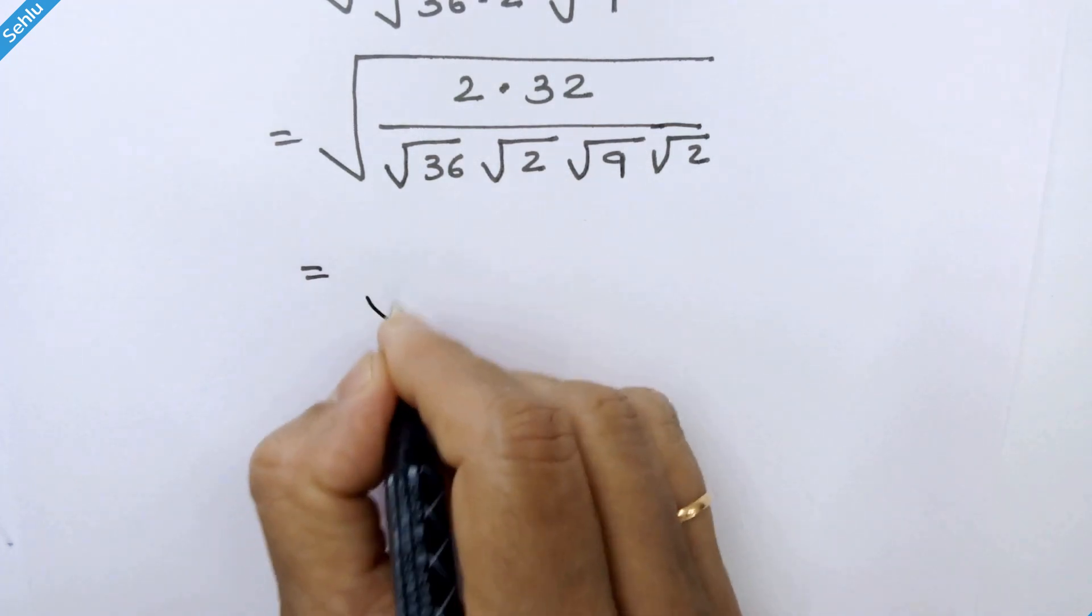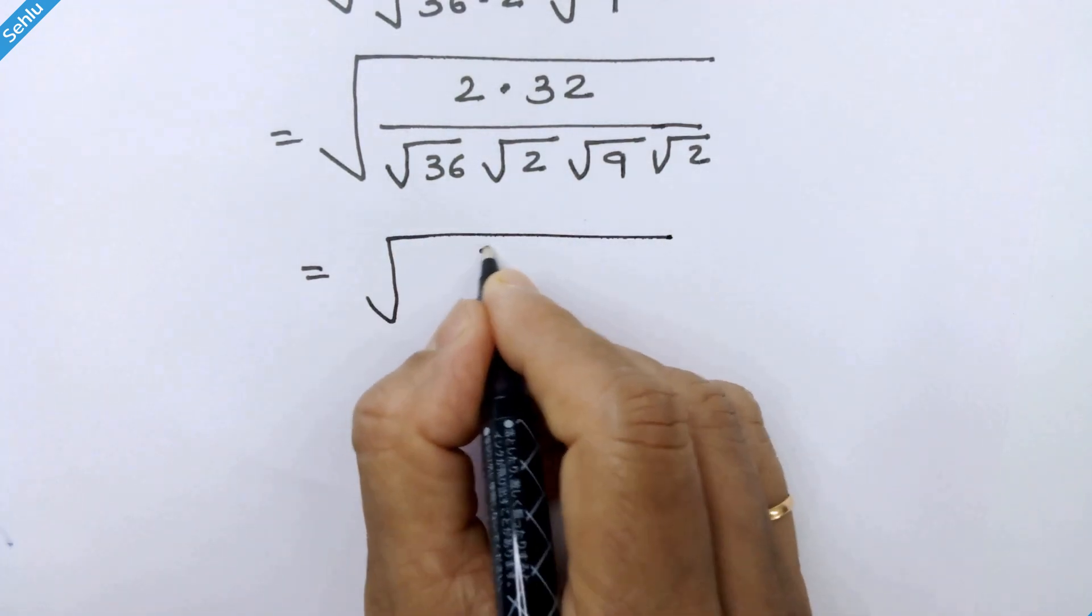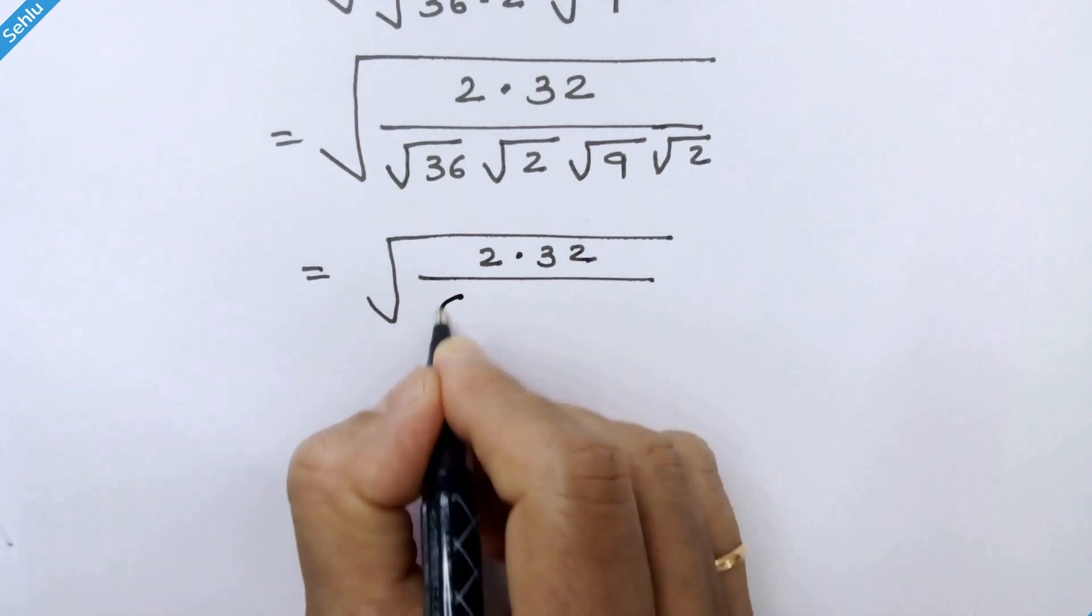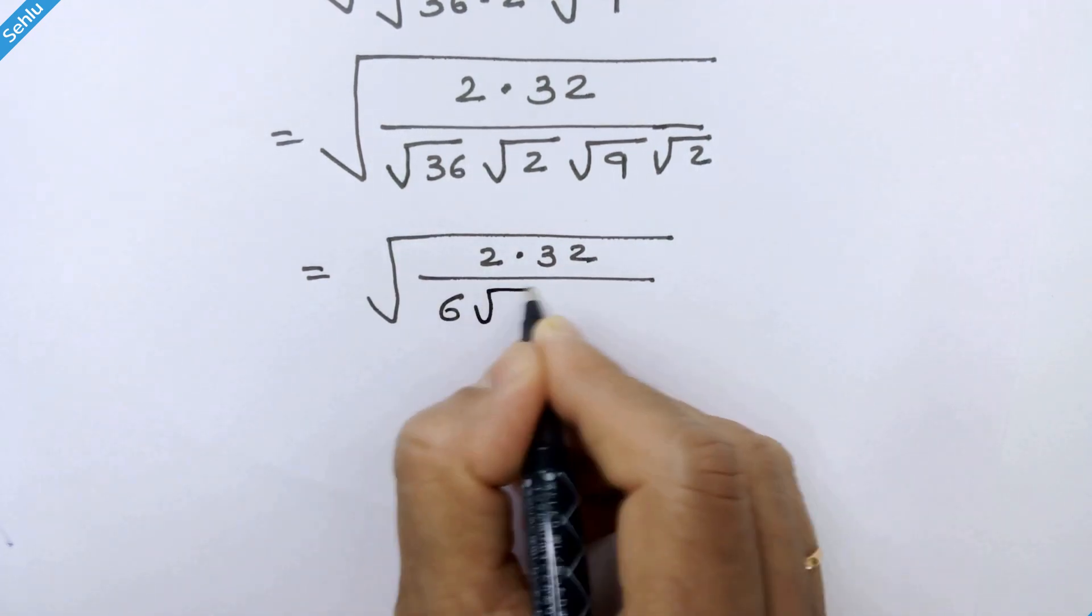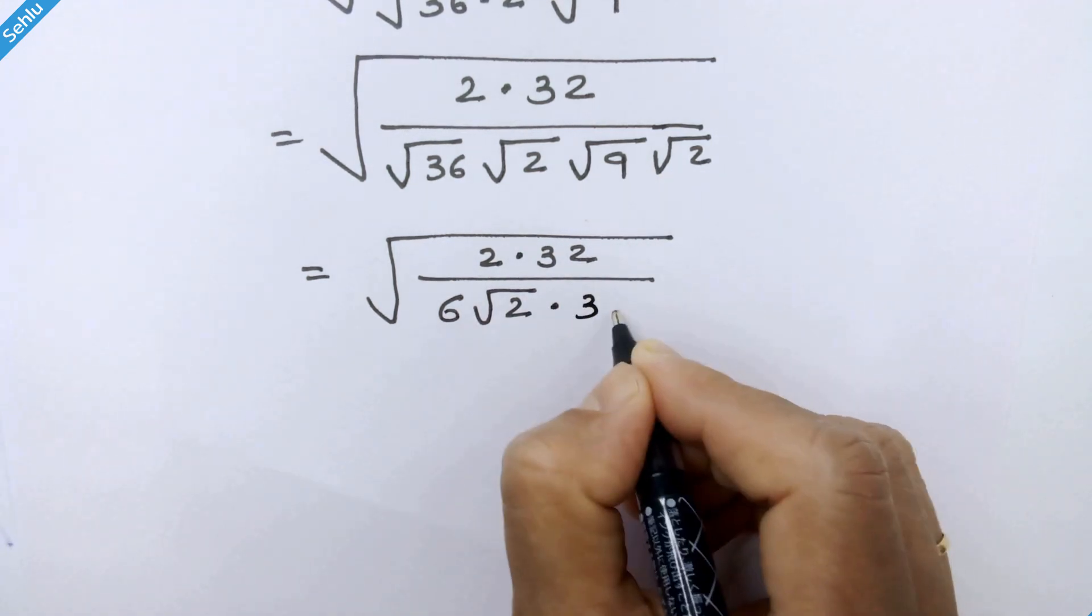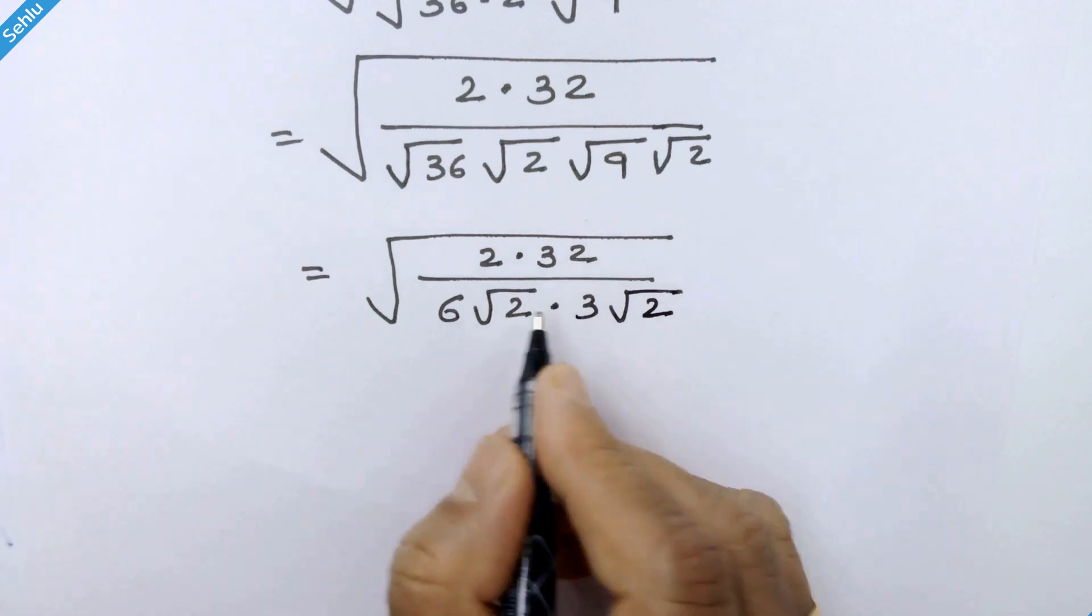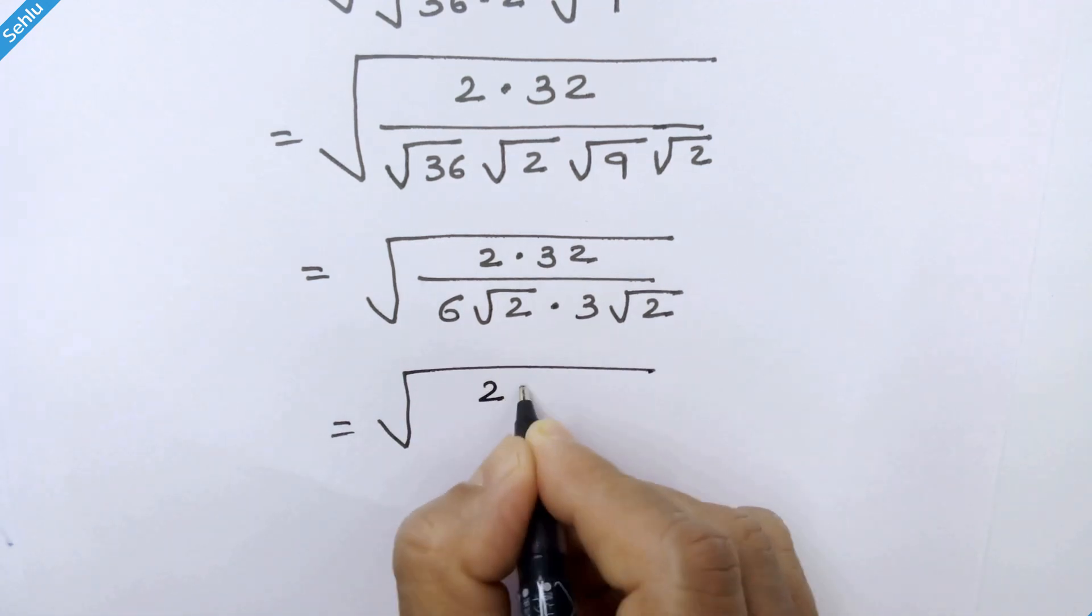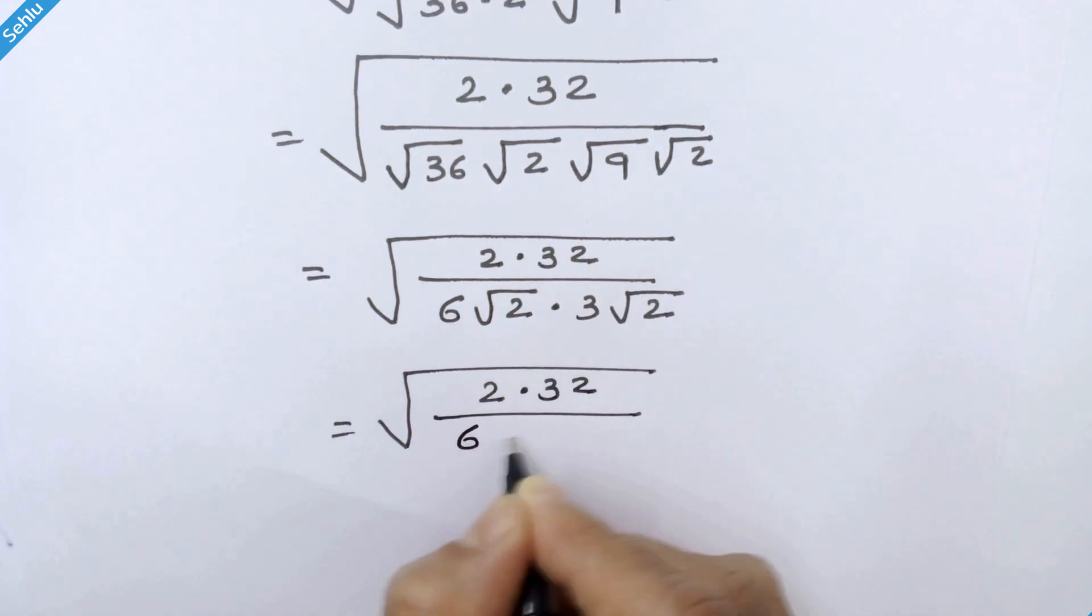Now in the next step, 2 times 32 over square root 36 is 6 times square root 9 is 3 times square root 2. Now we have square root 2 times square root 2, so it will be 2 times 32 over 6 times 3 times 2.